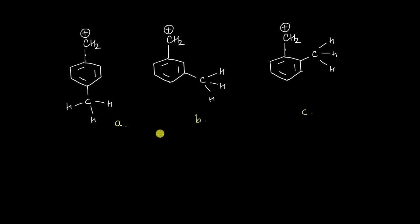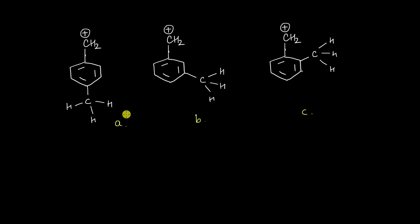In this video we are going to look at how hyperconjugation affects the stability of a benzyl cation. We have methyl groups attached at various positions of a benzyl cation and we are going to see how it affects the stability of the cation.